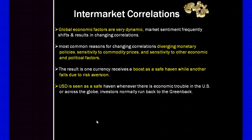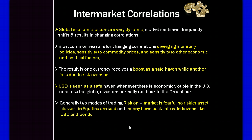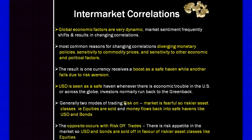You'll often hear traders talk about the US dollar being seen as a safe haven. Whenever there's economic trouble in the US or across the globe, investors run back into the safe haven of the greenback. When trading, you generally have two modes: risk-on mode, where riskier asset classes like equities are sold and money flows back into safe havens like the US dollar and bonds; and risk-off mode, where risk appetite is present and the US dollar and bonds are sold in favor of riskier asset classes like equities.